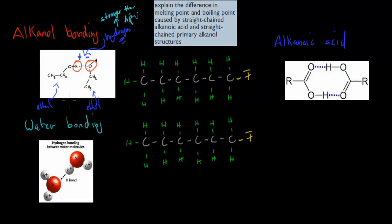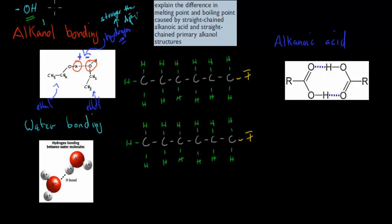The main difference in melting and boiling points caused by straight-chained alkanols is due to their hydrogen bonds. Alkanols have one OH functional group, which means there's the possibility of forming one hydrogen bond with another molecule.